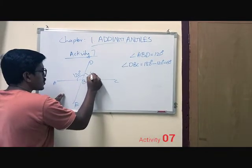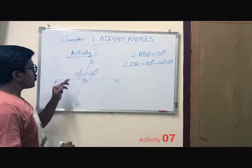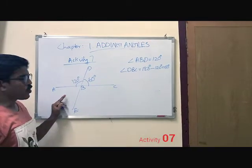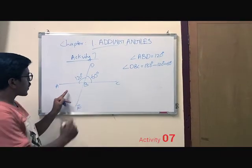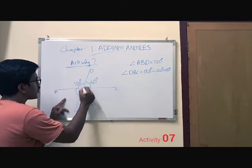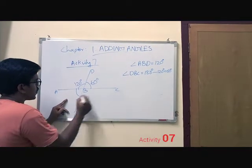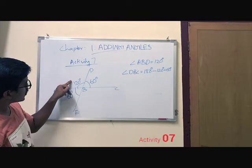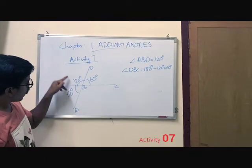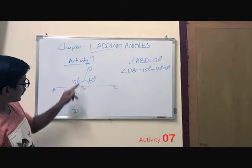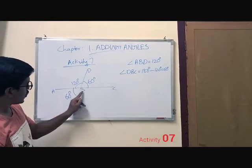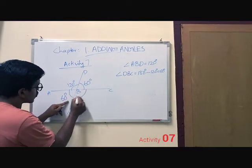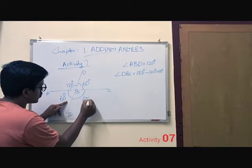Here we got 60 degrees. And we also studied that opposite angles are always equal. So this angle and this angle are opposite — if this angle is 60 degrees, then this angle is also 60 degrees. If this angle is 120 degrees, the opposite of angle A, B, D is angle F, B, C, so that is also 120 degrees.